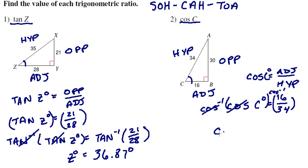These cancel. So C is equal to the inverse cosine of 16 over 34.